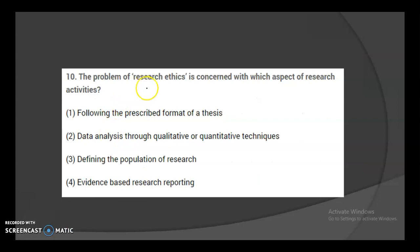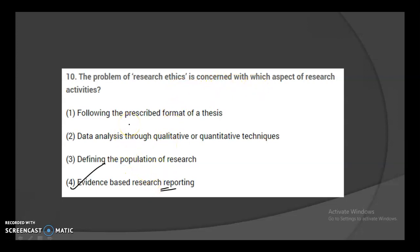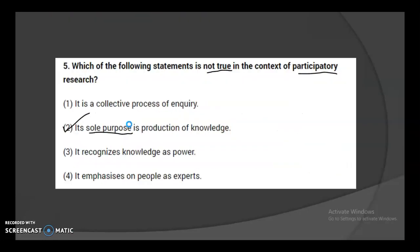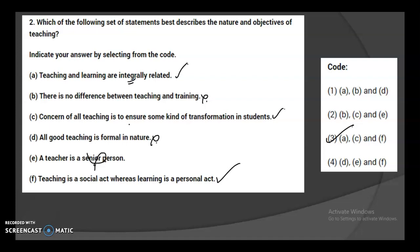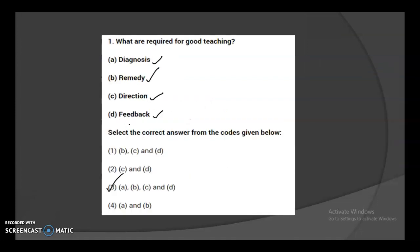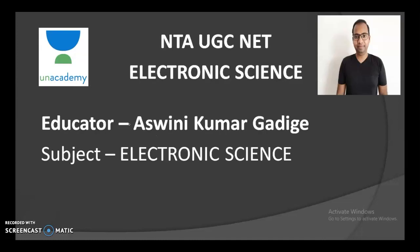Tenth question: the problem of research ethics is concerned with which aspect of research activities? Research ethics is concerned with evidence-based research reporting — you must properly show the evidence for whatever research you are reporting, including literature surveys and related documentation. So that completes the 10 questions discussed in this video. For more questions, a series will continue on my YouTube channel — please subscribe and tap the bell icon.